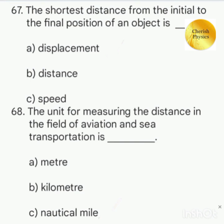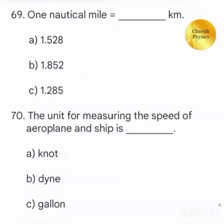The shortest distance from the initial to final position of an object is. The unit for measuring the distance in the field of aviation and sea transportation is. One nautical mile is equal to dash kilometer. The unit for measuring the speed of aeroplane and ship is.